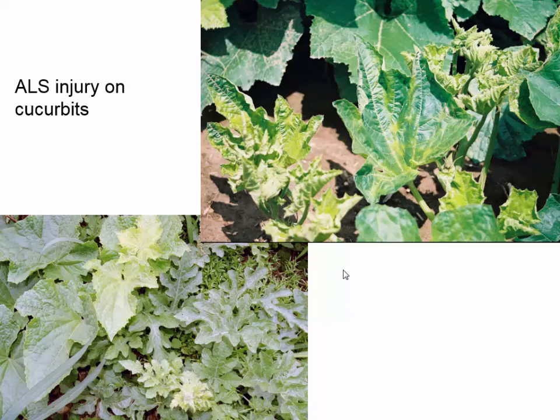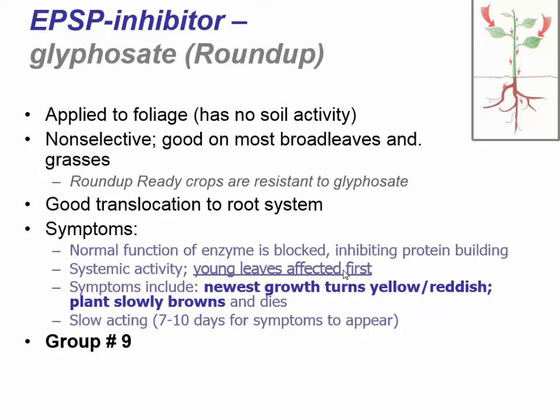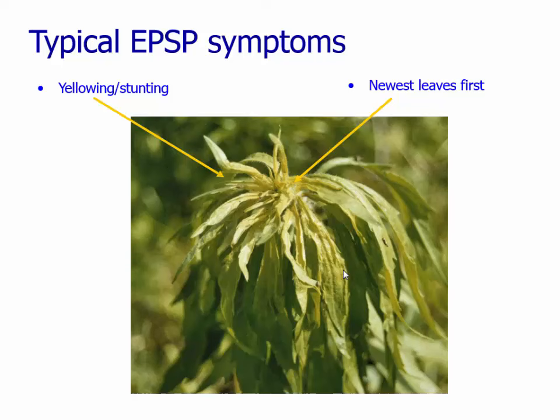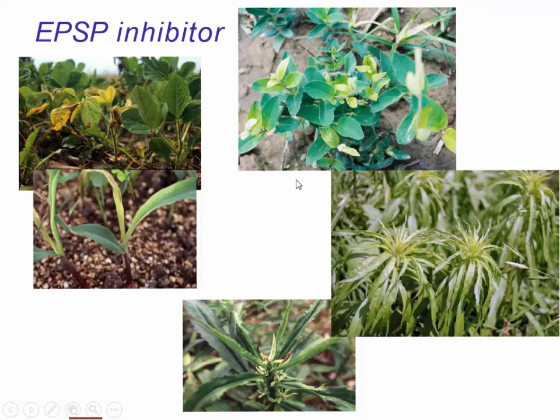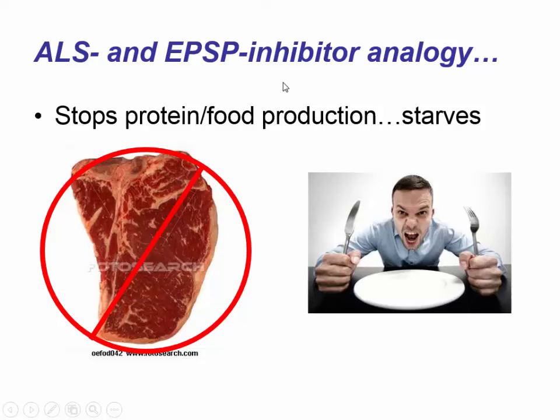ALS injury on cucurbits shows yellowing in the younger leaves. Glyphosate — the other amino acid inhibitor — stops production of different essential amino acids than ALS chemistry. It translates to the growing point. Symptoms on horseweed or marestail show injury starting as yellowing, relatively slow-acting. On beans, older leaves appear fine and very dark green, but newer tissue emerging is very light colored — essentially the plant is starving to death as a result.